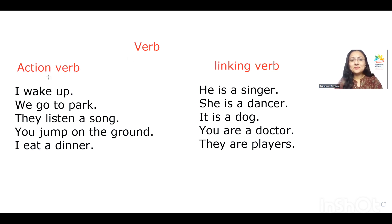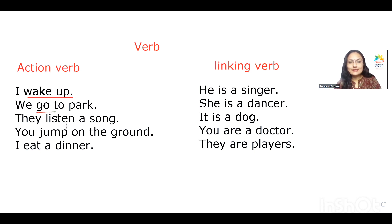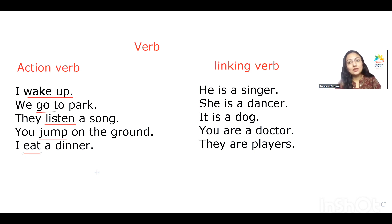The first one is an action verb. Here is a sentence: I wake up — wake up is an action, that is a verb. We go to the park — go is an action, it is a verb. They listen to a song — listen is an action, so that is a verb. You jump on the ground — jump is an action, that is a verb. And I eat dinner — eat is an action, that is a verb.